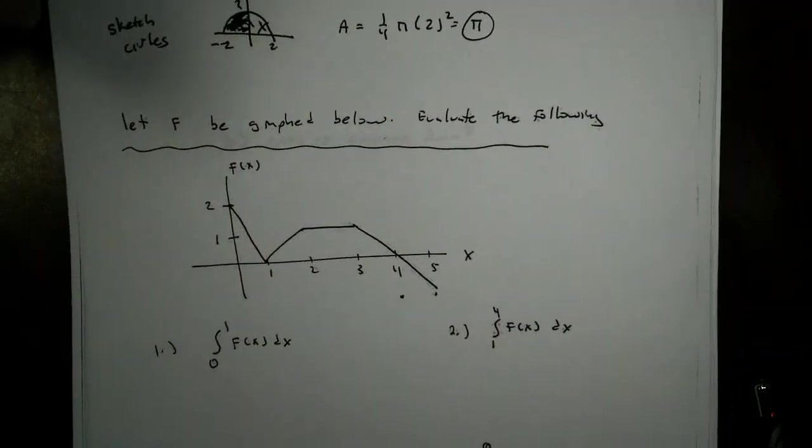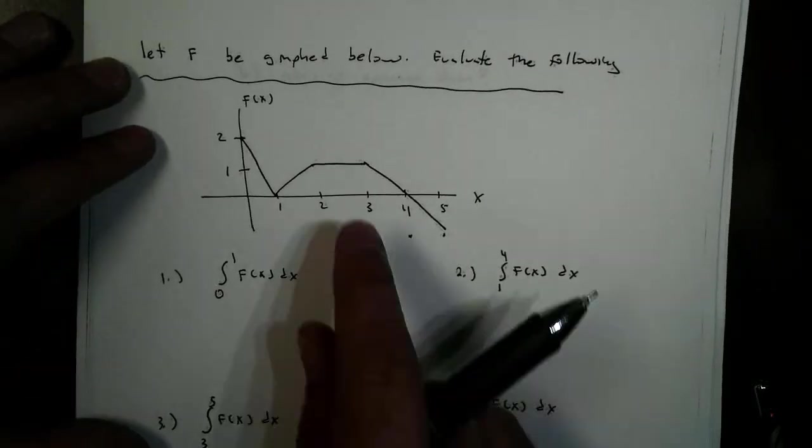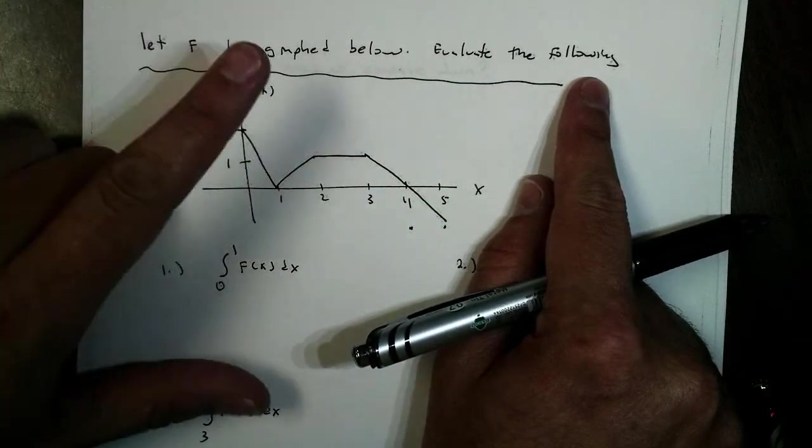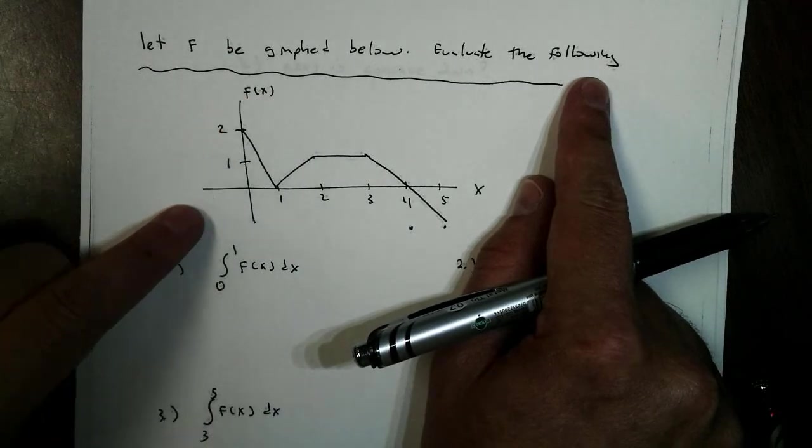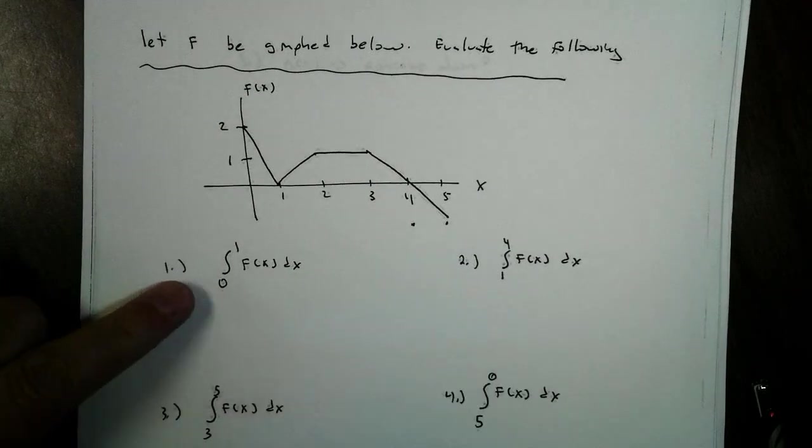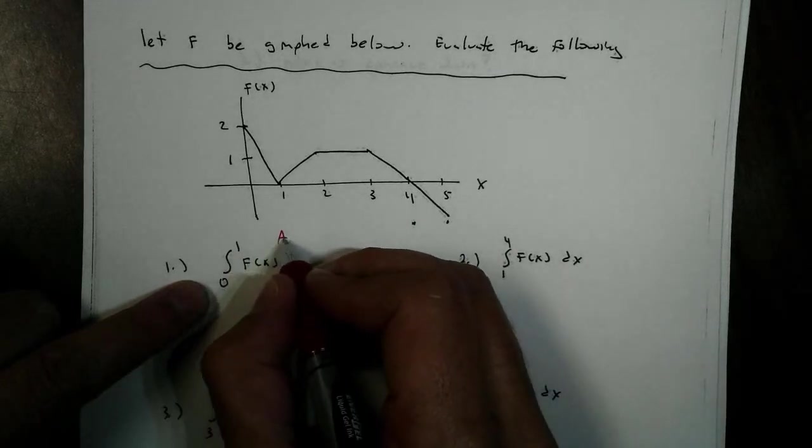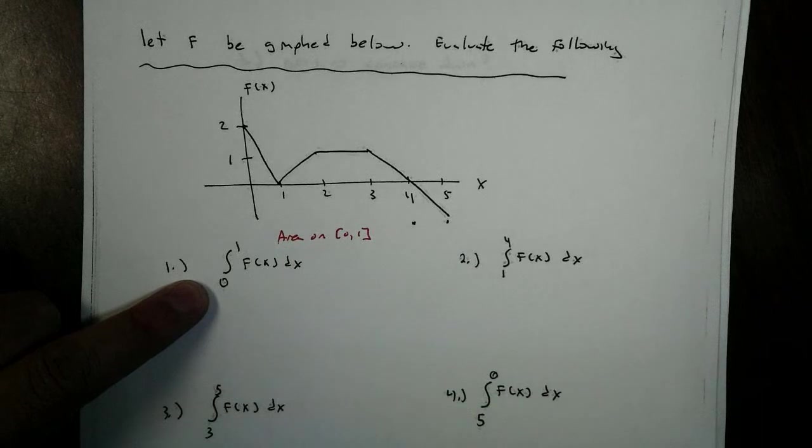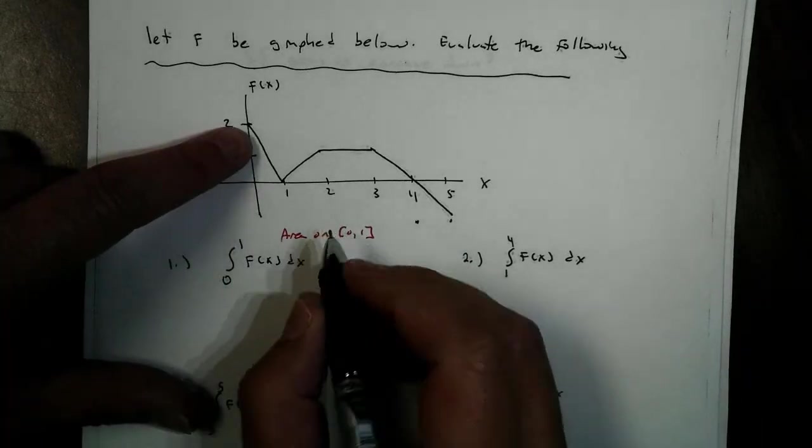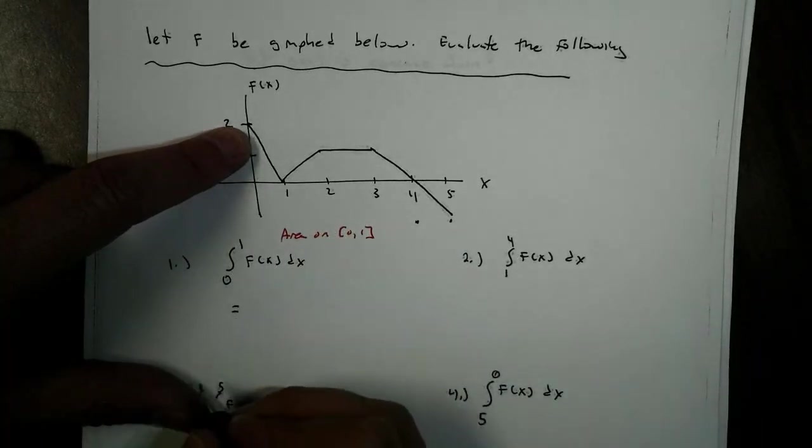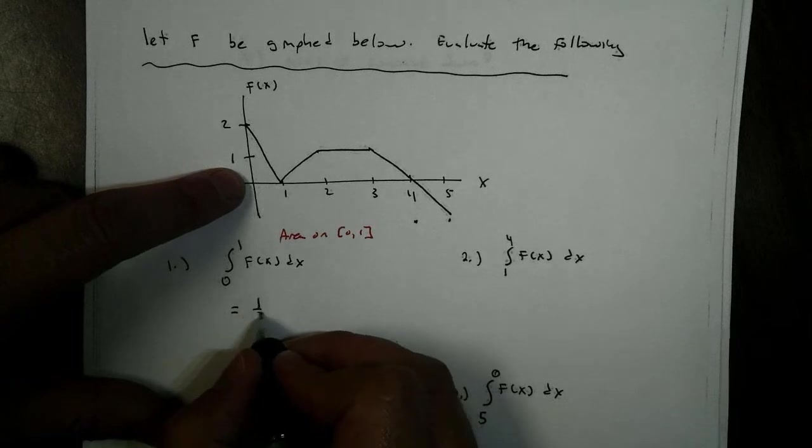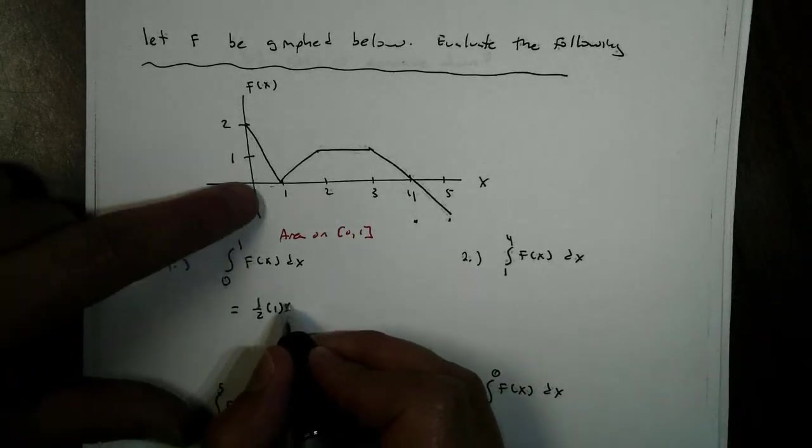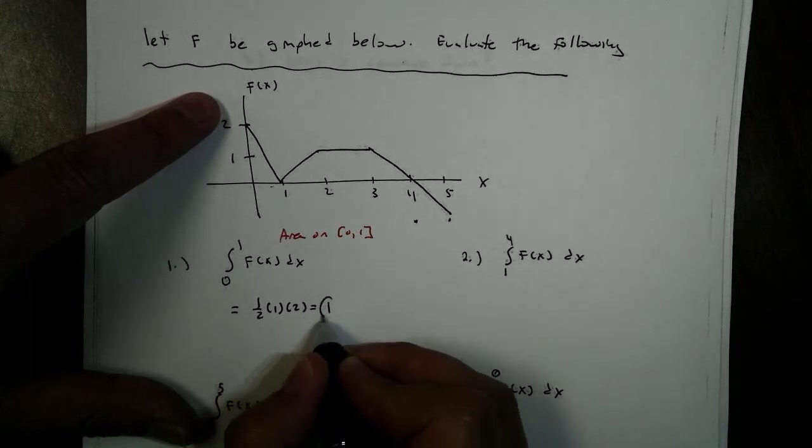Here's a question that we saw on our homework a few nights ago. It says, let f be graphed below. Evaluate the following. So, this is my function of f. Now, these are a bunch of line segments. For question number one, this is saying, find the area on the domain 0 to 1. And, this is a triangle. So, it's above. So, it's going to give me 1/2. The base is 1. The height is 2. So, that's just going to give me 1 right there.